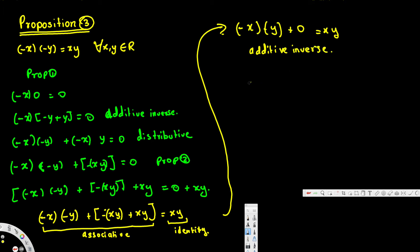Finally, we derive by identity that negative x times negative y is equal to xy, by identity. And that's what we want to end up with: negative x times negative y equals xy. We used a bunch of axioms here. If you want to know what these axioms mean, I made a separate video on that — I put the link in the description. If you are trying to learn discrete mathematics, there are a bunch of videos in my playlist. Don't forget to subscribe — see you next time!